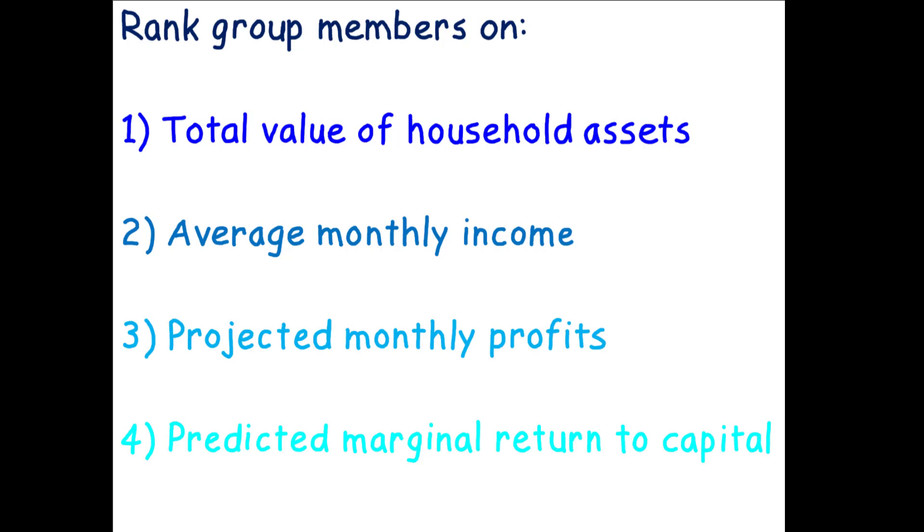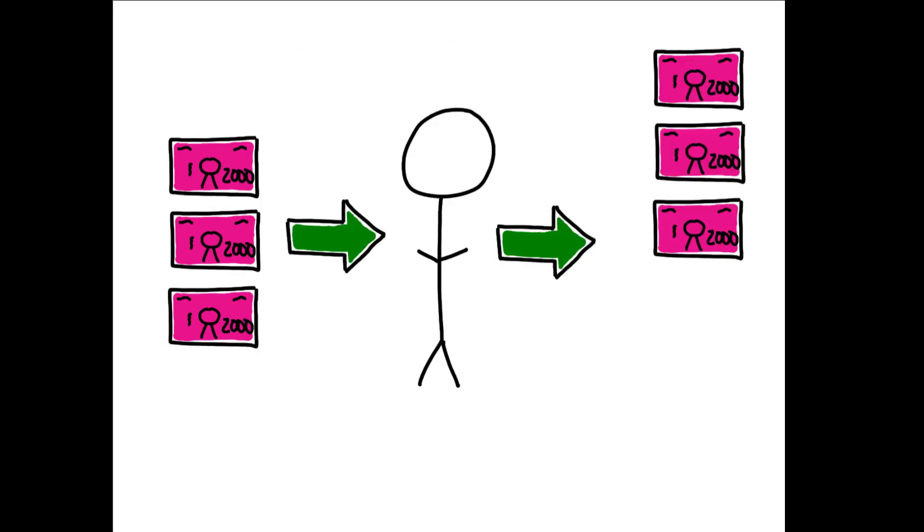For the latter, respondents were asked, of the entrepreneurs in their group, who could grow their profits the most if they were to receive a grant of 6,000 rupees or roughly 100 US dollars? This is a shock equivalent to one and a half months of profits for the median business in this sample.